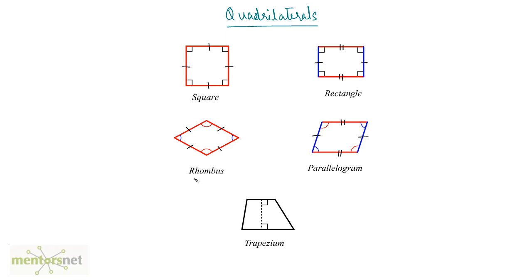A rhombus is a little bit different. It is similar to a square in the sense that the sides are of equal length, but the angles are not 90 degrees. In fact, opposite angles are of equal value. Coming to a parallelogram, it is similar to a rectangle. We have the opposite sides as parallel to each other and the opposite sides are of same length, but the angles are not 90 degrees — the opposite angles are equal to each other.